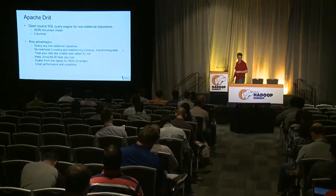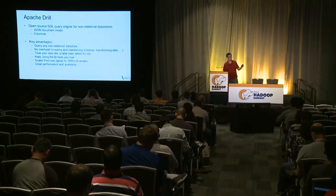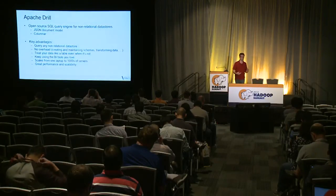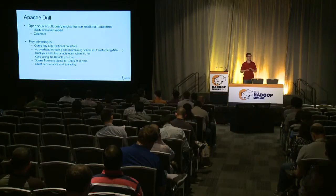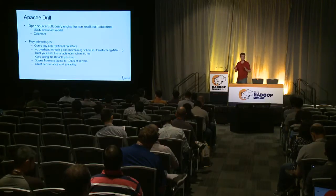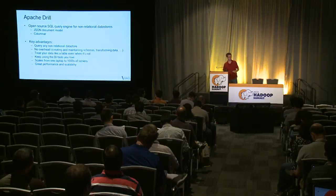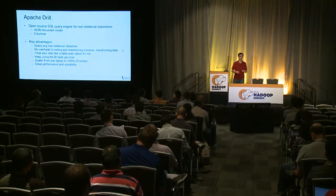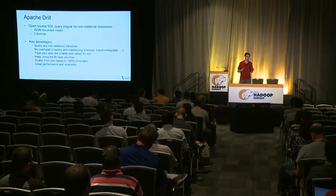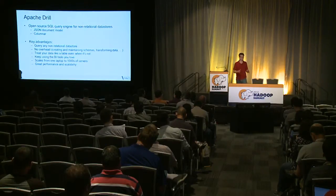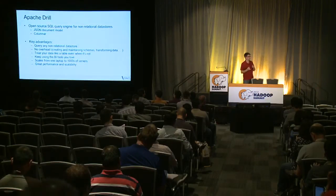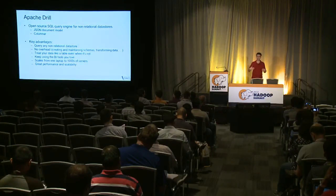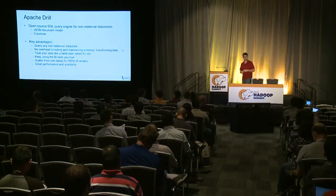We really wanted to give you a quick overview of what Drill is, and then get into details of how it works and some demo examples. At a high level, it's an open source SQL query engine, designed for non-relational data stores, which is how it's a little different from most other systems today. It has a built-in JSON document model that's columnar throughout, both on disk and in memory.